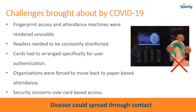Moving to the recent challenges faced by companies due to the coronavirus crisis: fingerprint-based access and attendance systems were completely banned because of the scare of spreading the disease. Some machines support cards so people went back to cards, but where cards weren't supported, companies had to move back to paper-based attendance systems. Sprintly devices with fingerprint also support mobile-based access, so many of our customers who were using fingerprint immediately switched to mobile-based access. The transition was very smooth.